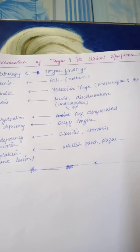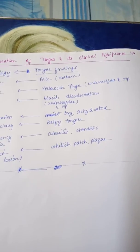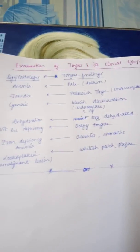If there is a yellowish tinge on the undersurface or on the tip of the tongue, then we can say that the patient has jaundice.